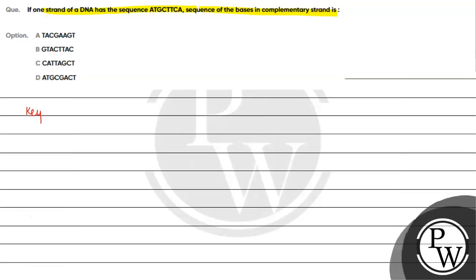The key concept for this question is complementary bases. What is the complementary base of Adenine? Thymine. And the complementary base of Thymine is Adenine. What is the complementary base of Guanine? The complementary base is Cytosine.